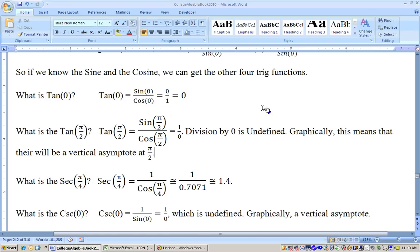Tangent of π over 2—remember on a unit circle, π over 2 is 90 degrees, same as being at the top of that circle there. The coordinates are (0, 1), so the x value is 0 and the y value is 1. So 1 over 0—division by 0 is not 0, it's undefined. And graphically, that means that there will be a vertical asymptote for the graph of the tangent function at π over 2.